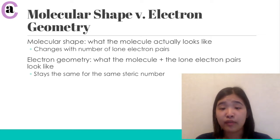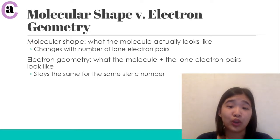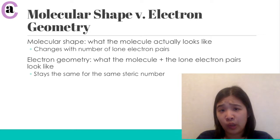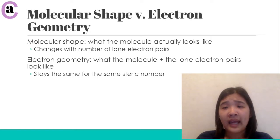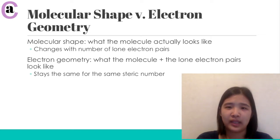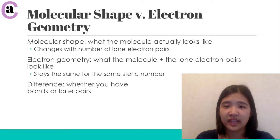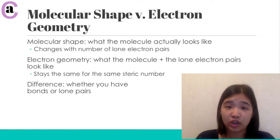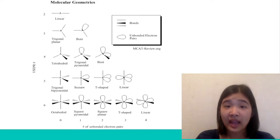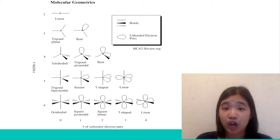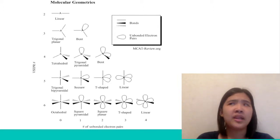By contrast, the electron geometry stays the same for all molecules sharing a given steric number — it depends on the steric number, not the number of lone electron pairs. As we get into the actual examples, you'll see the difference more clearly. To recap: whether you have lone pairs or bonds tells you the difference between the molecular shape and the electron geometry.